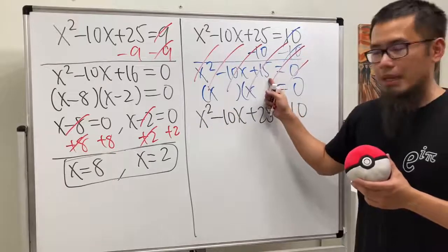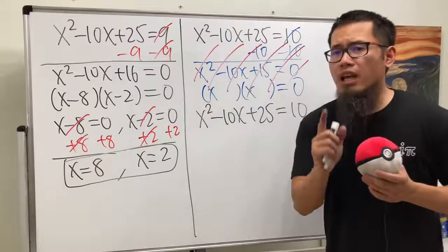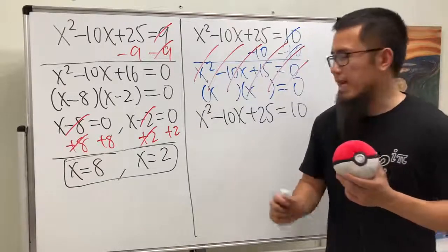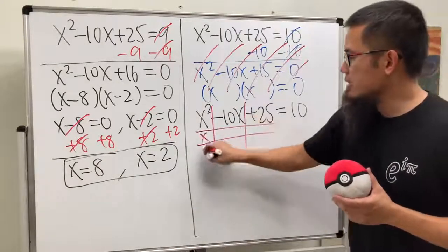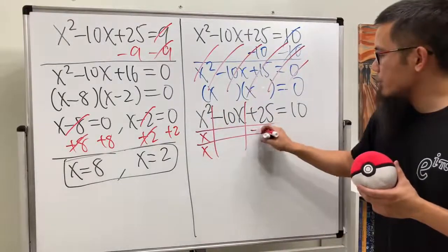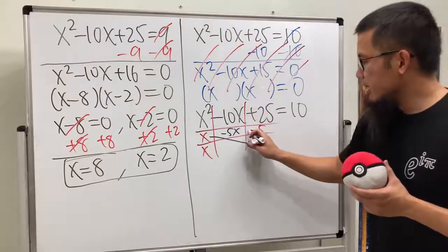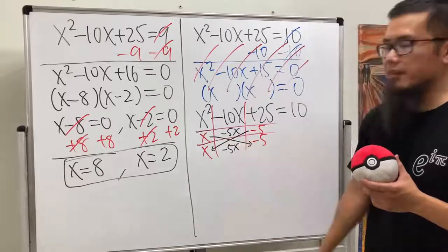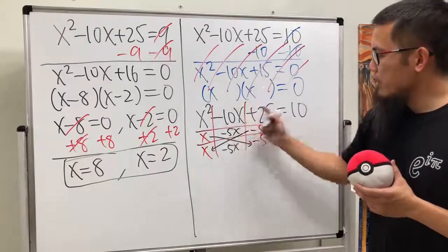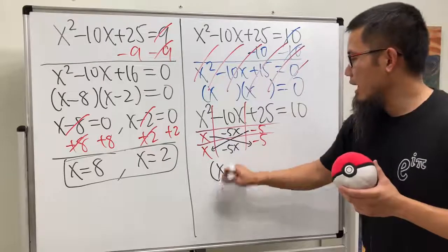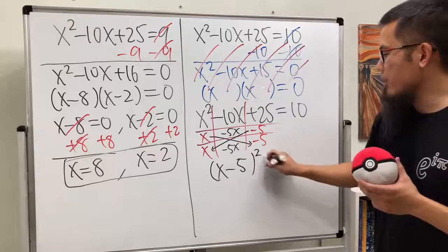Well, earlier we couldn't factor this, but now, if you just look at this right here, can we factor it? Yes. And not only we can factor it, but the most important part is that this right here is a perfect square. So, let's do the tic-tac-toe right here real quick. You see, x times x will give us x squared. Here, let's put on negative 5 and negative 5. x times negative 5 gives us negative 5x. And then, this negative 5 times this x will also give us negative 5x. Together, they do combine to be negative 10x. So, we know this can be factored into x minus 5 times x minus 5, which is just x minus 5 squared. And that's equal to 10.